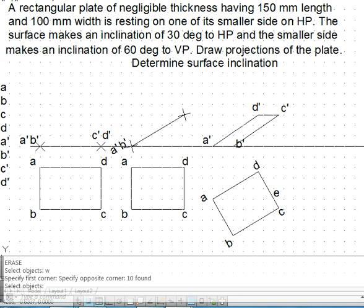Even though inclination of one smaller side was given as 60 degrees, this is not the inclination of the surface. It is the inclination of edge AB. The edge AD makes some other inclination. Different edges make different inclinations, which is not essentially the inclination of the surface.